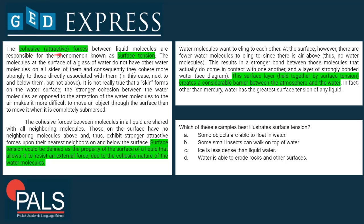The first sentence gives us an introduction already. 'Cohesive' tells us what cohesive means — attractive forces between water molecules leads to surface tension. Then down here we have a definition of surface tension: surface tension could be defined as the property of the surface of a liquid that allows it to resist external forces, due to the cohesive nature of the water molecules. And a bit more: the surface layer held together by surface tension creates a considerable barrier between the atmosphere and the water.